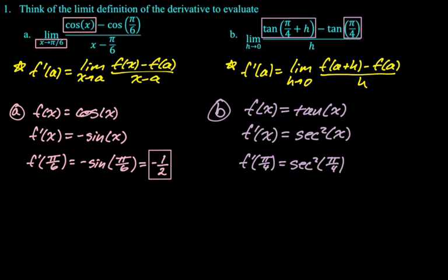So f prime of pi over 4 is secant squared of pi over 4. Cosine of pi over 4 is root 2 over 2. The reciprocal of that is just root 2, or 2 over root 2 but you can simplify it. So it's root 2. And then I need to square that. So root 2 squared is 2. All right, that's that problem. Let's take a look at the next one.